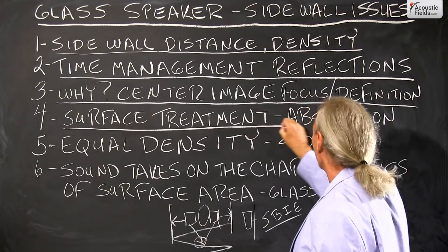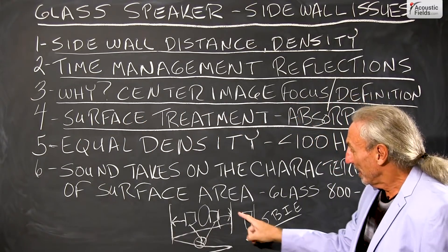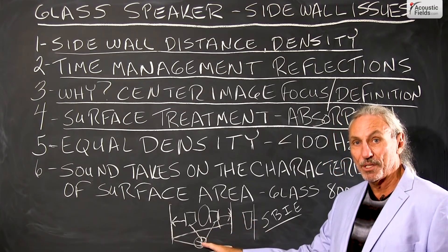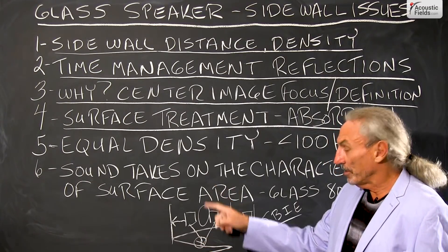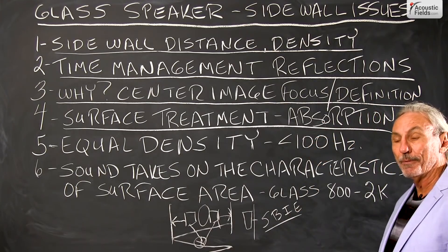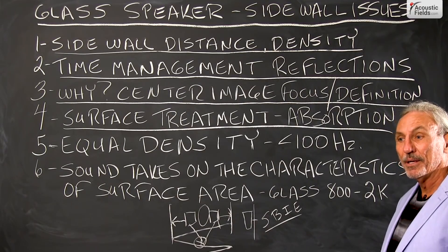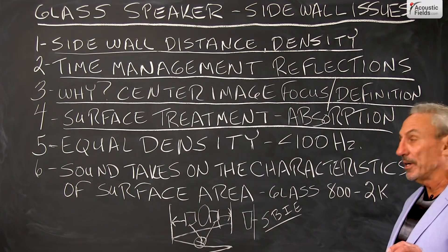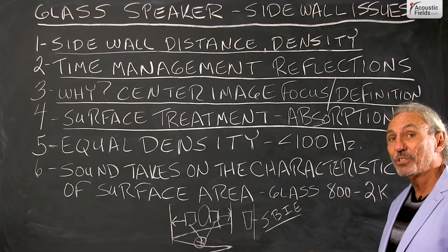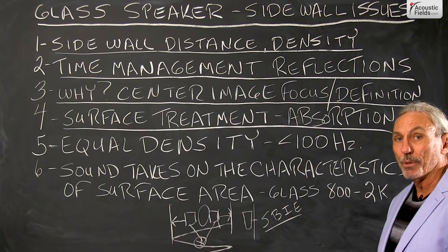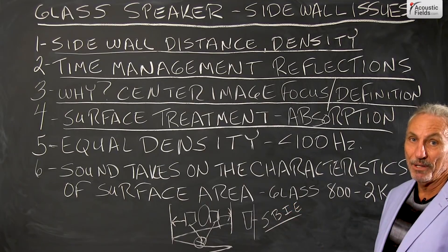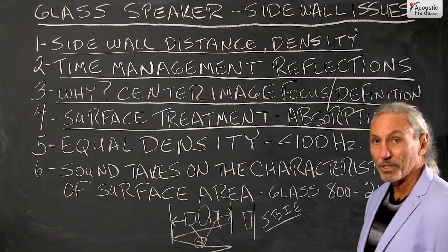Surface treatment is critical in this situation because the sidewall is usually our shortest distance of all — shorter than the distance to the listening position and shorter than the distance to the front wall. For room usages that demand definition, separation, and clarity, we use absorption because we can control it. Not just any absorption though — rate and level of absorption are critical, and we have to make sure the material has the right rate and level for the usage of the room.